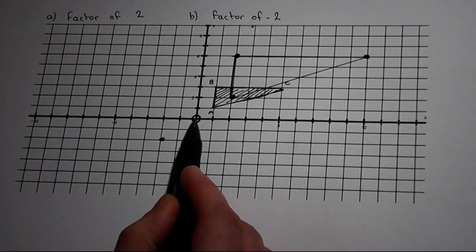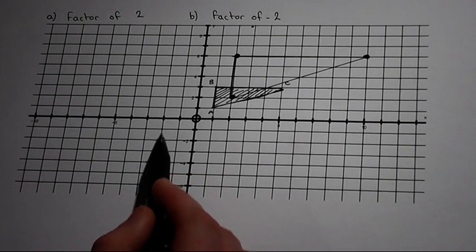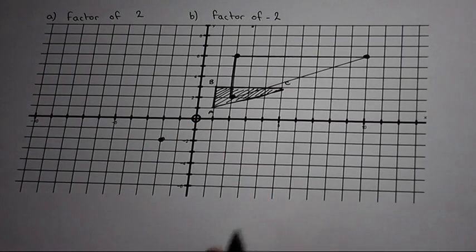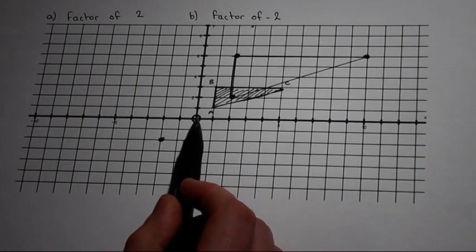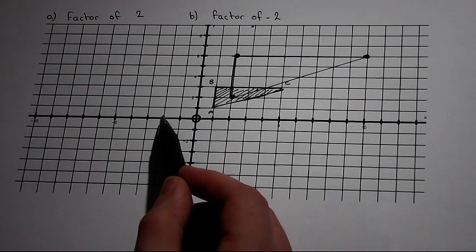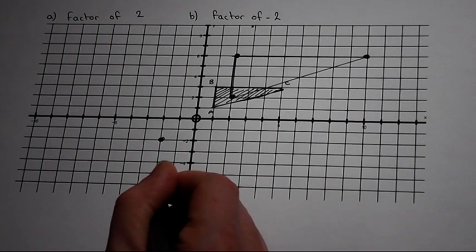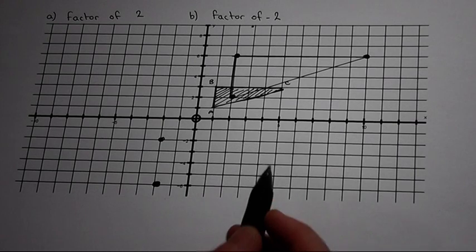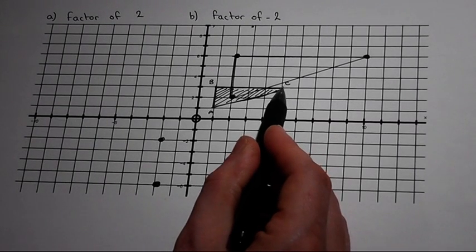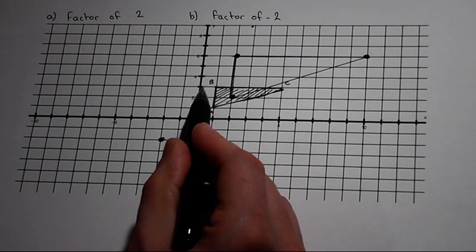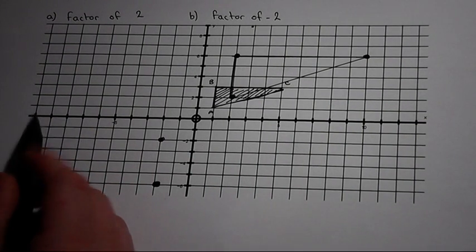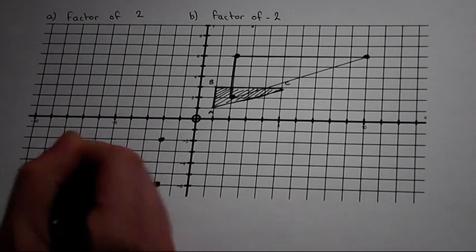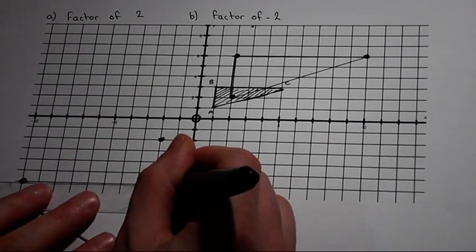B was left one, down three, so to double it: left two, down six. C would be left five, down three, so we go left ten, down six. And then just join all the coordinates together.